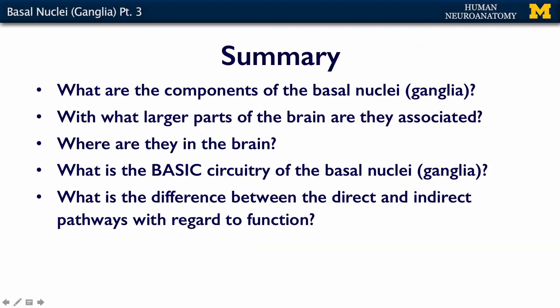In summary, what I want you to know: what are the components of the basal nuclei, and what larger parts of the brain are they associated with? Where are they in the brain? If I gave you a picture of a coronal section, I'd want you to be able to point out the caudate, the putamen, the globus pallidus, and the nigra. What's the basic circuitry — those three big arrows drawn on the diagram? And what's the difference between the direct and indirect pathways with regard to motor function?